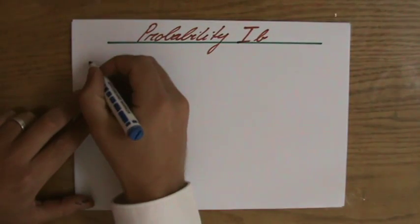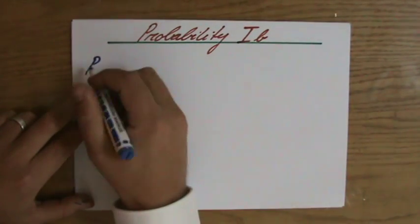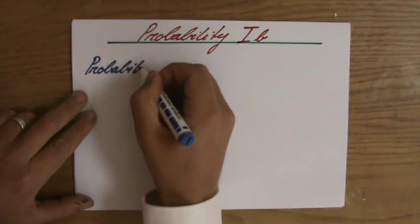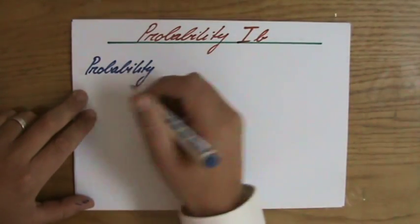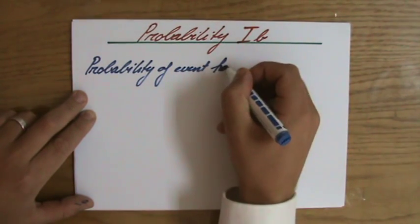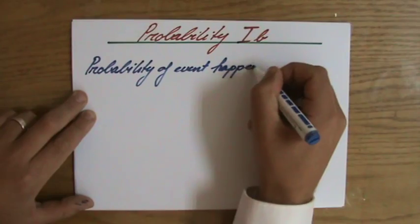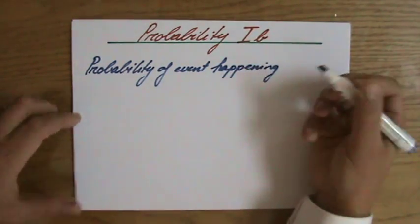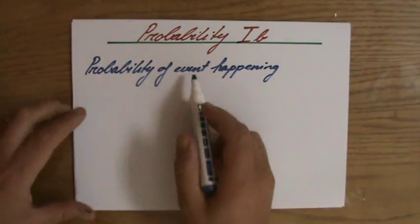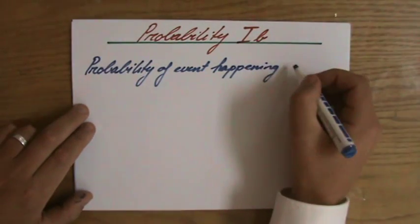The probability of something happening, so I'm going to write it out now, the probability of an event happening, for instance, the event could be rolling an even number on a fair dice, so that could be the event, so the probability of an event happening equals